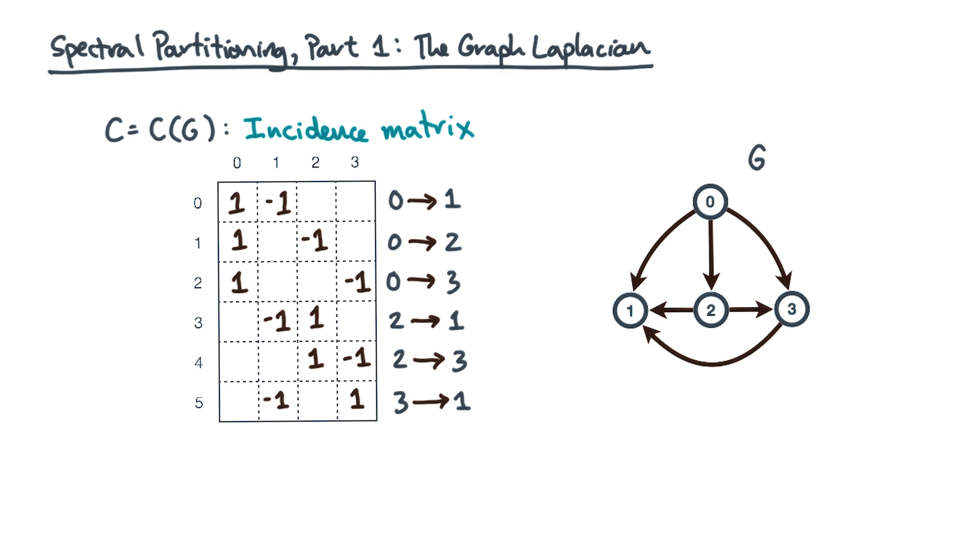From this incidence matrix, let's construct a new object called the graph Laplacian. We'll define it as the product of C transpose times C. To see what this product is, I want you to compute it algebraically and then interpret it.